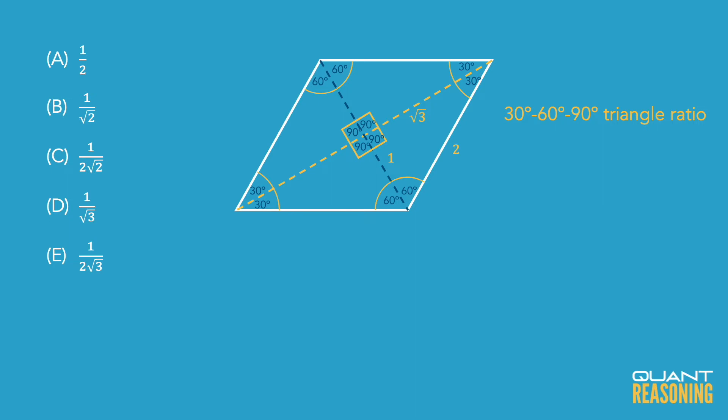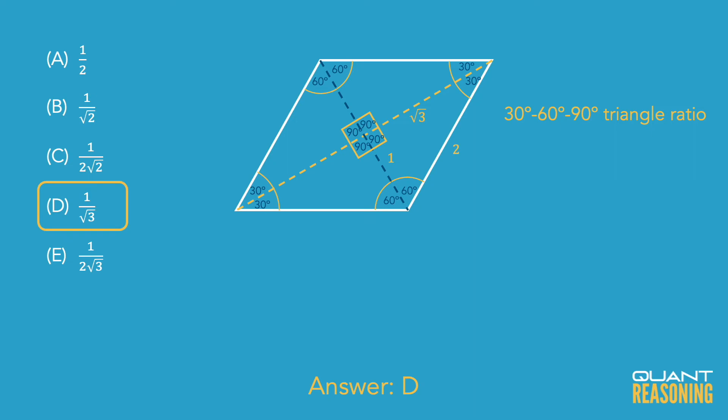Since the medium-length side is √3 times as long as the short side, it follows that the long diagonal is √3 times as long as the short diagonal, and therefore the correct answer is D.